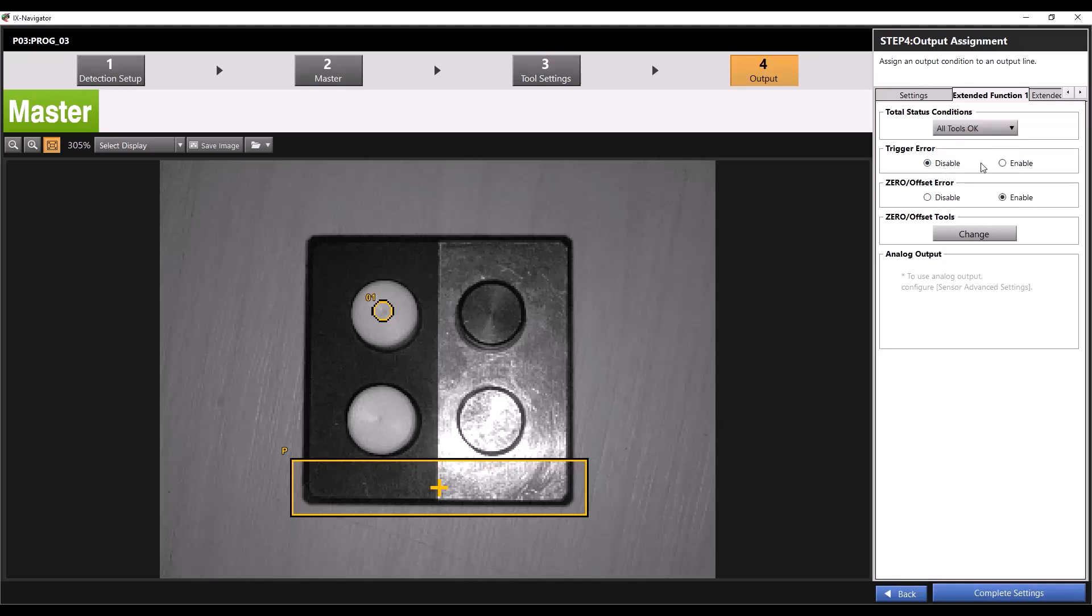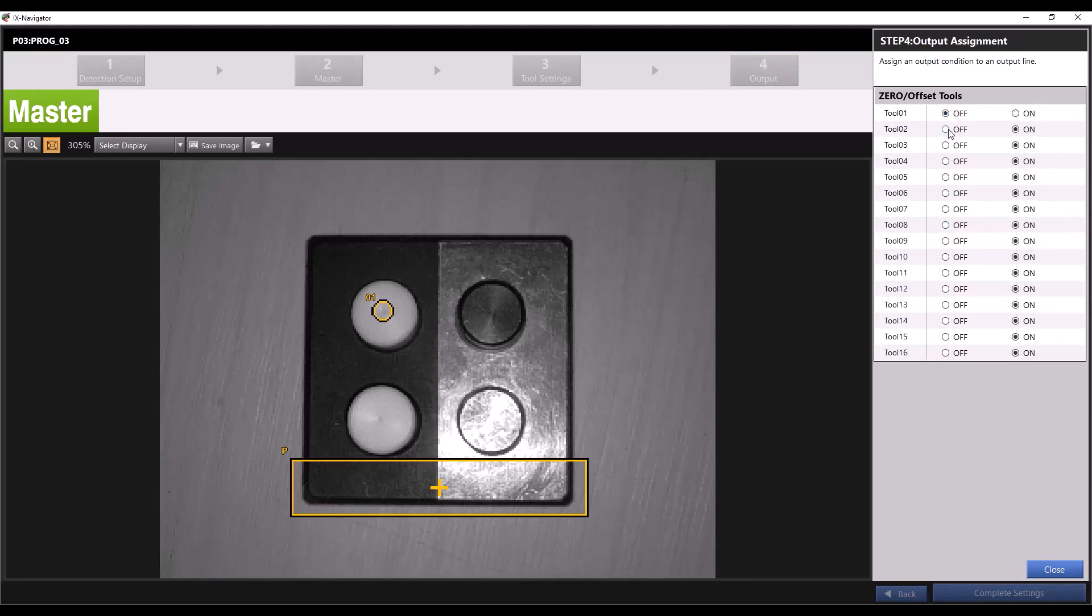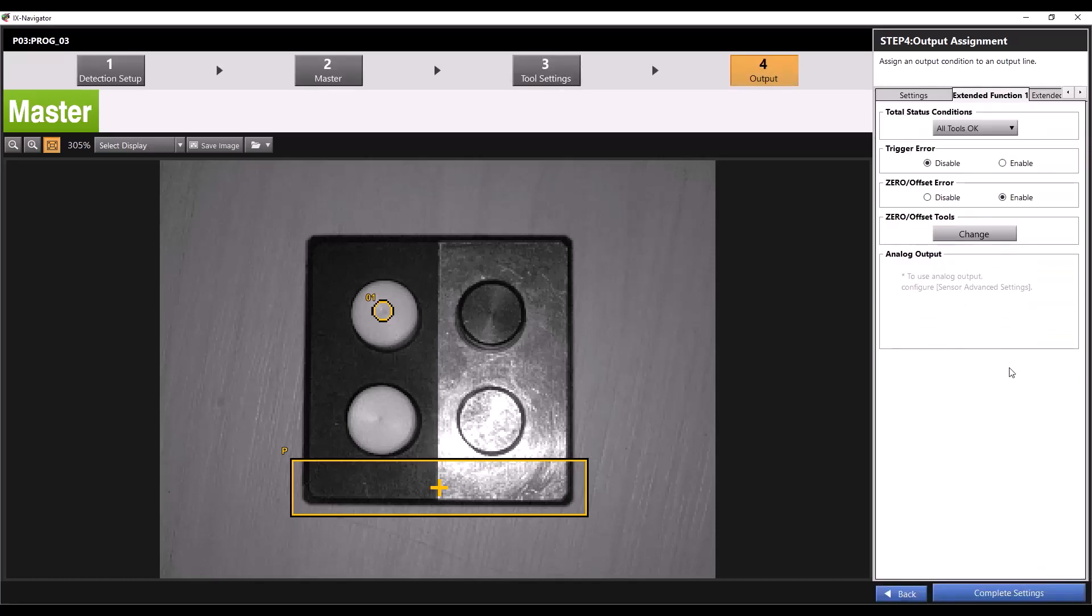You also have options for trigger error and zero offset error. Enabling these means the error output will turn on in the event of a trigger or zero offset error. With these options disabled, the error output will not turn on if there is a trigger or zero offset error. By clicking Change on the zero offset tools option, you can adjust which tools will be affected by a batch zero offset, a function that zeroes the readings on all tools. By turning off tool one, that tool would not be affected by a batch zero offset. You can also set your analog output here. For more details on this, please view the dedicated video for analog output.